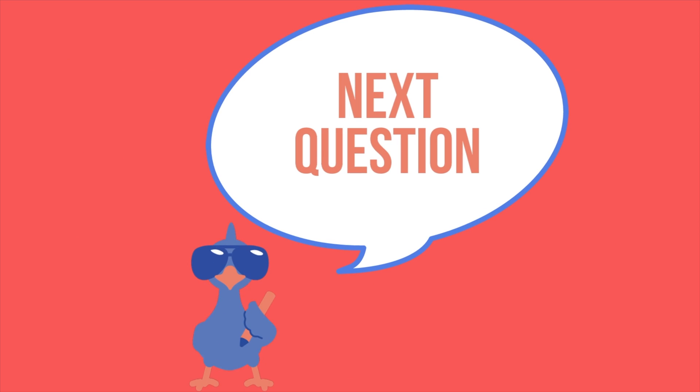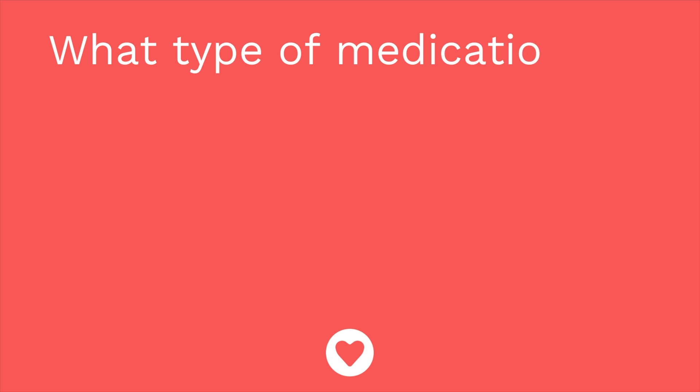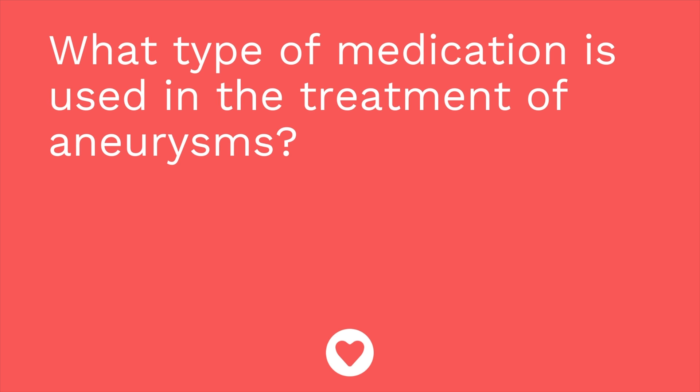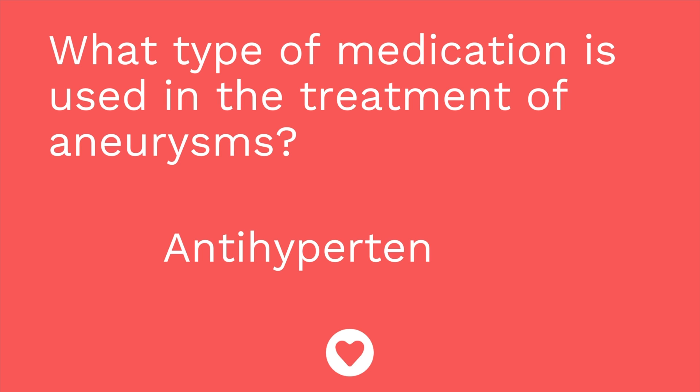Question number two: what type of medication is used in the treatment of aneurysm? The answer is antihypertensives — we want to control the patient's blood pressure. If you answered a specific type of antihypertensive agent, that's fine too.